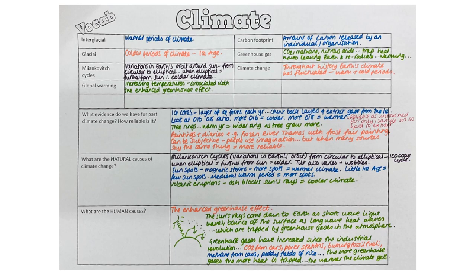Then you've got tree rings — a different ring for each year of a tree's life. If the ring is wide, it was a warm year; if narrow, it was a cold year. Then there are paintings and diaries, such as paintings of frost fairs on the River Thames with elephants walking up and down. We'd never see that today. This tells us the climate was very cold back then. However, paintings can be subjective — people use their imagination. But when you've got lots of sources all saying the same thing, that makes it more reliable.